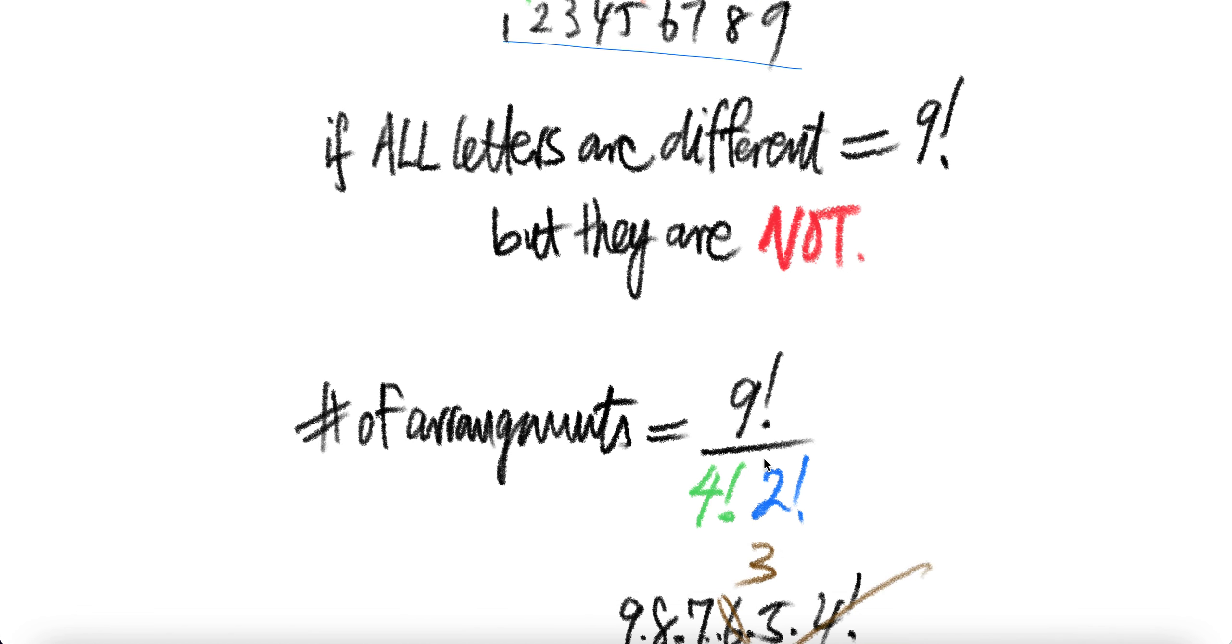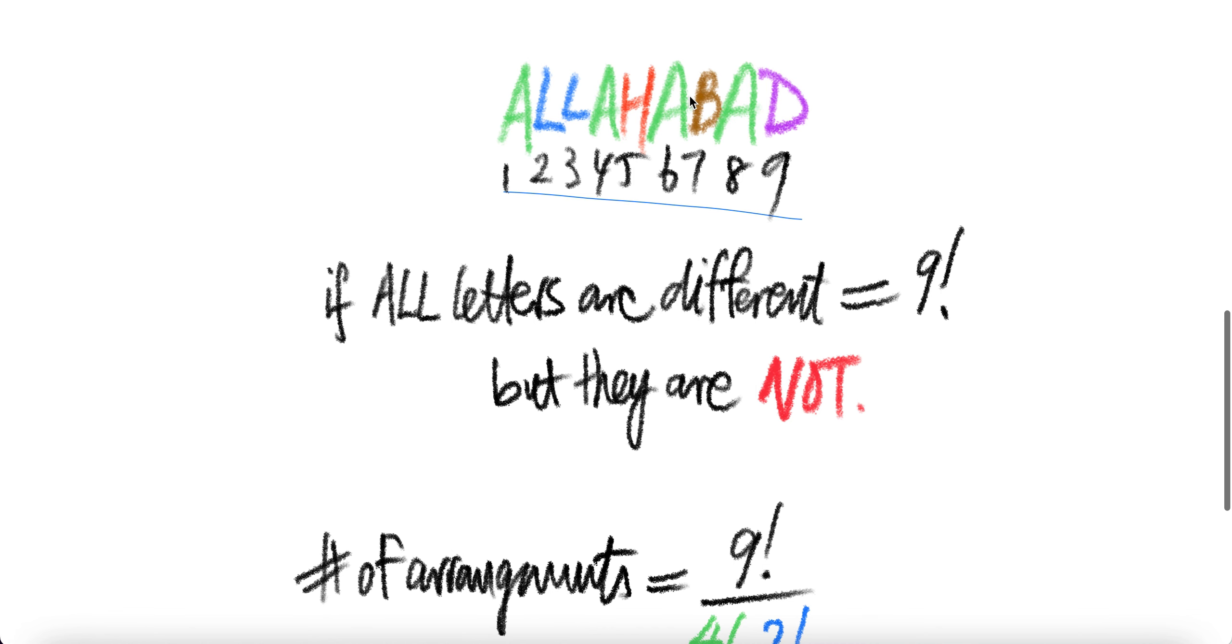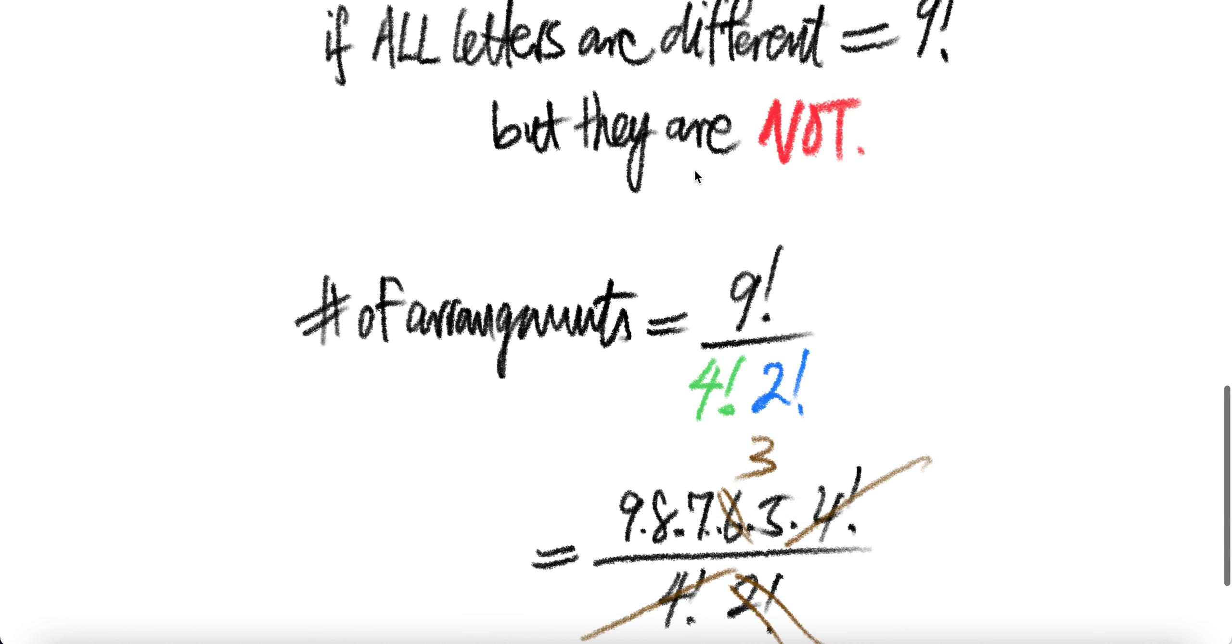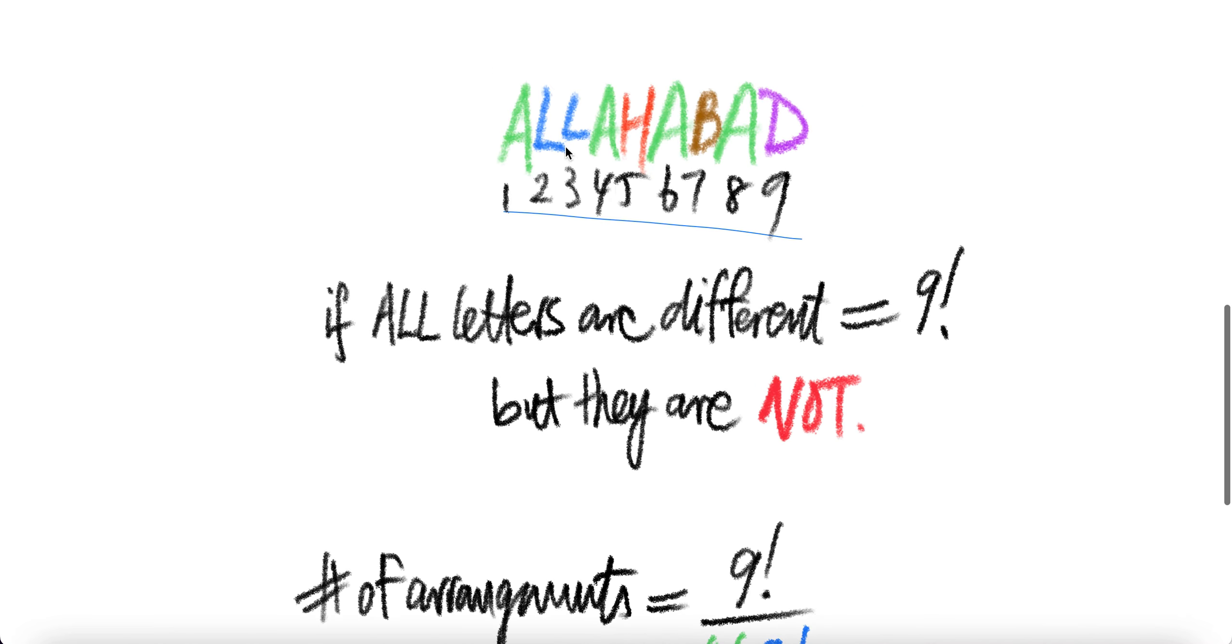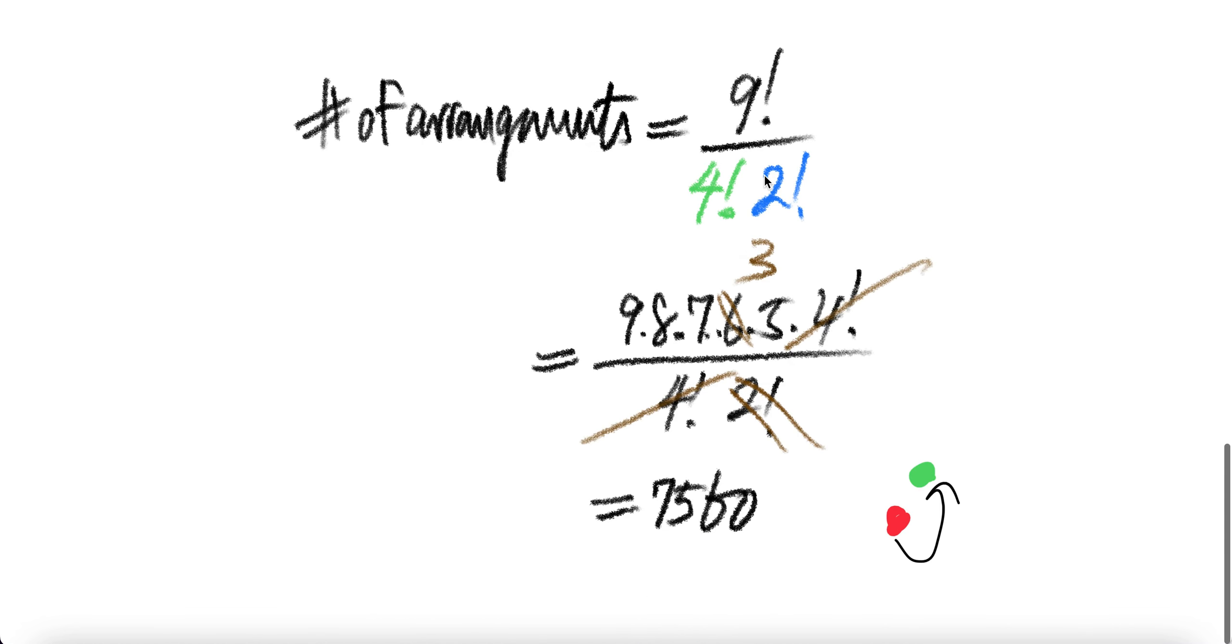we need to correct that by dividing. Since there are four A's, there are four factorial ways to permute the A's, so you divide by four factorial. After that, you need to also account for the two L's, so divide by two factorial.